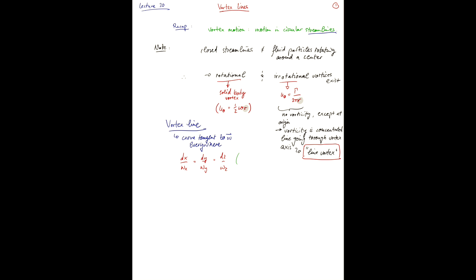This is analogous to streamlines. As I just said, in the case of an irrotational line vortex, we have one vortex line, and that goes through the axis of the vortex.